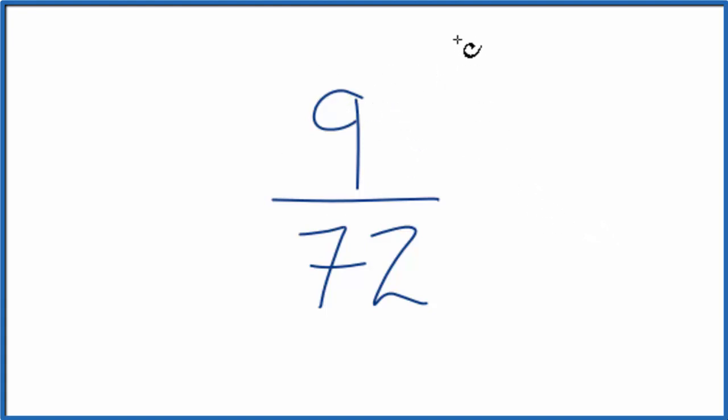We look at the factors for 9. 9 times 1, that equals 9. 3 times 3, that equals 9. That's about it.